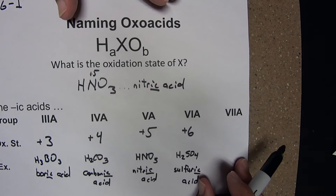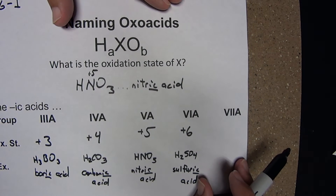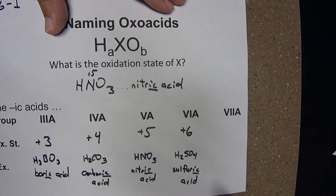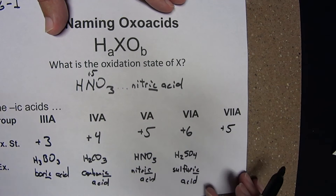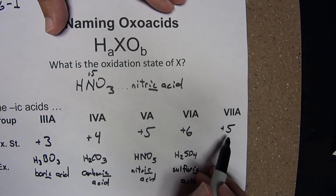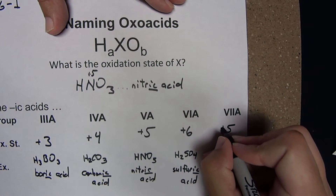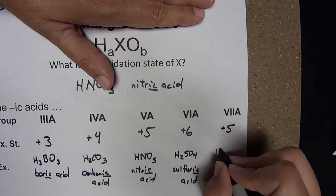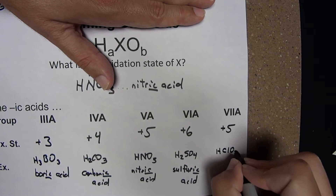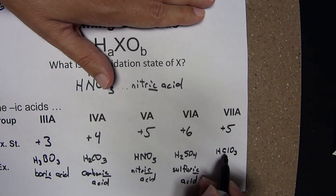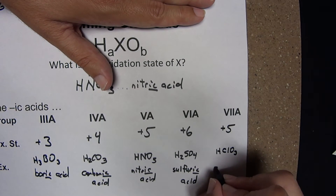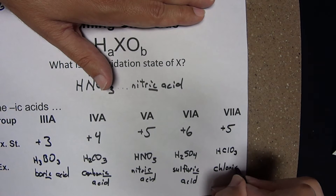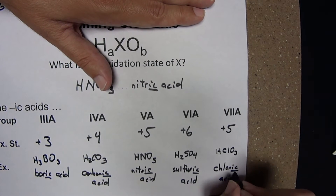When we get to group 7, the oxidation state for the ic acid is plus 5 — this is the exception to what we've seen before. When X is a halogen from group 7A, the ic acid in the series will have an oxidation state of plus 5. An example: HClO3. The oxidation state of that chlorine is plus 5, making this the ic acid. This is chloric acid.